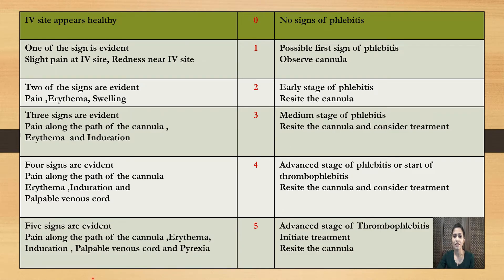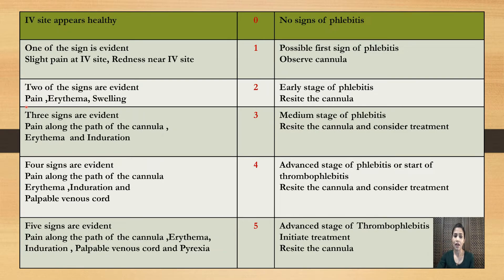So this is the VIP scale, and the score ranges from 0 to 5, based upon the signs. If the IV site appears healthy, you give a score of 0 — no signs of phlebitis, nothing to worry. If one of the signs is evident — either slight pain at the IV site or slight redness — you give a score of 1, meaning possible first sign of phlebitis, so you have to observe the cannula. If two of the signs are evident — pain, erythema, or swelling — you give a score of 2, indicating early signs of phlebitis, so you have to remove and resite the cannula.